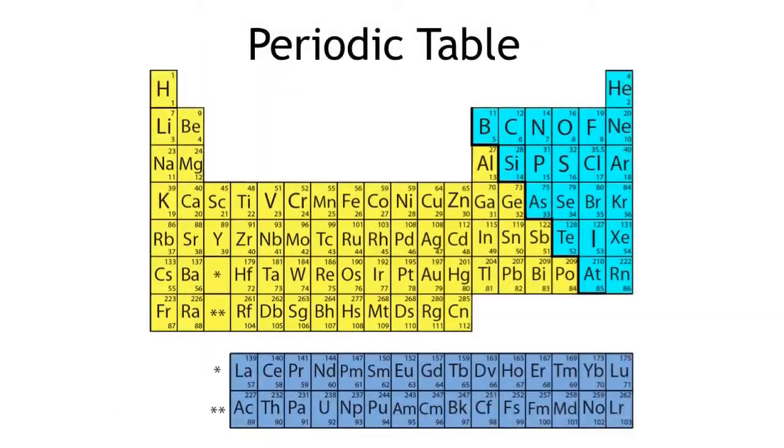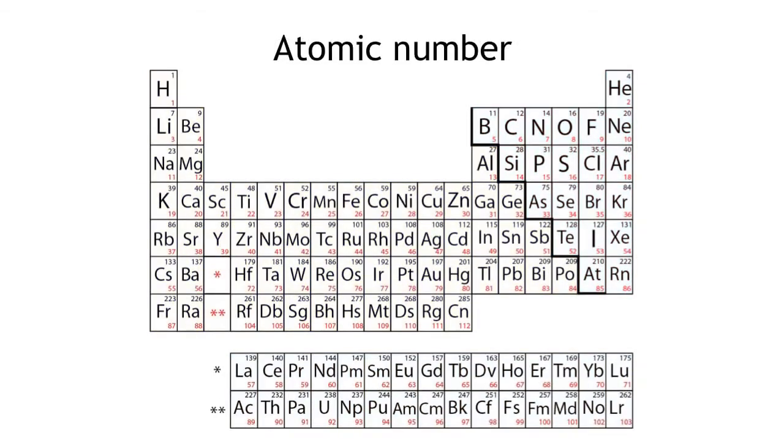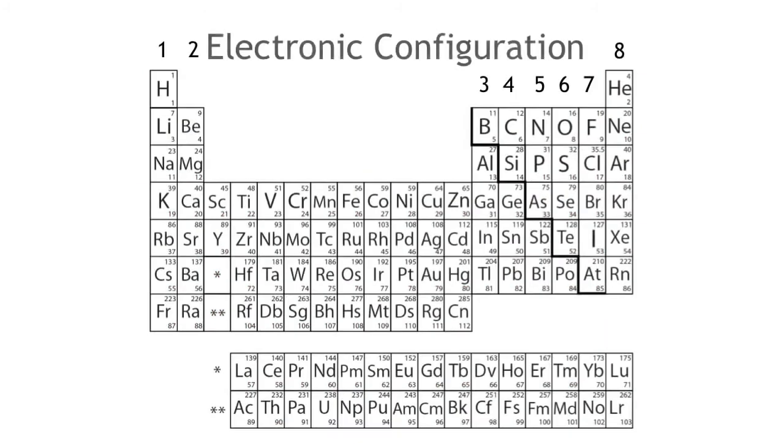The periodic table is a table that organizes the elements by their atomic number, electronic configuration, and chemical properties.